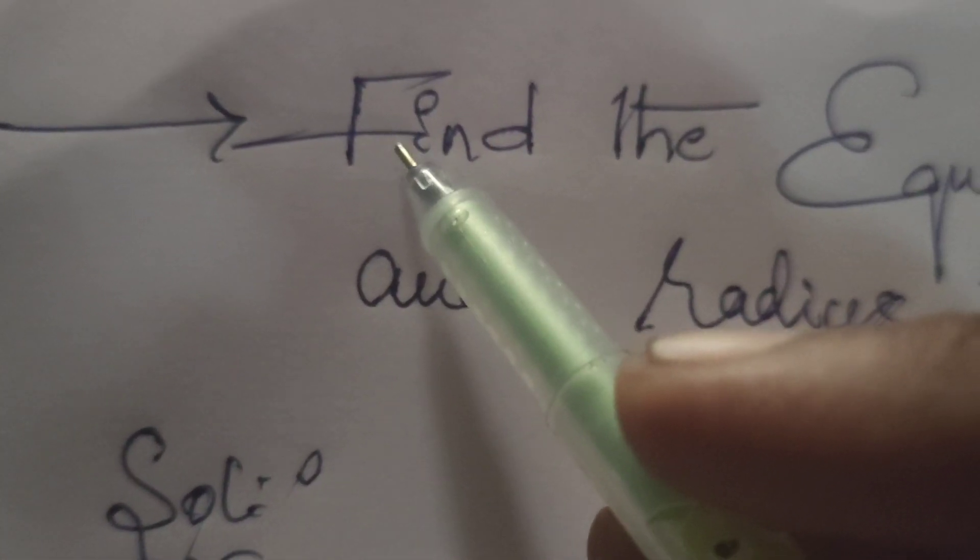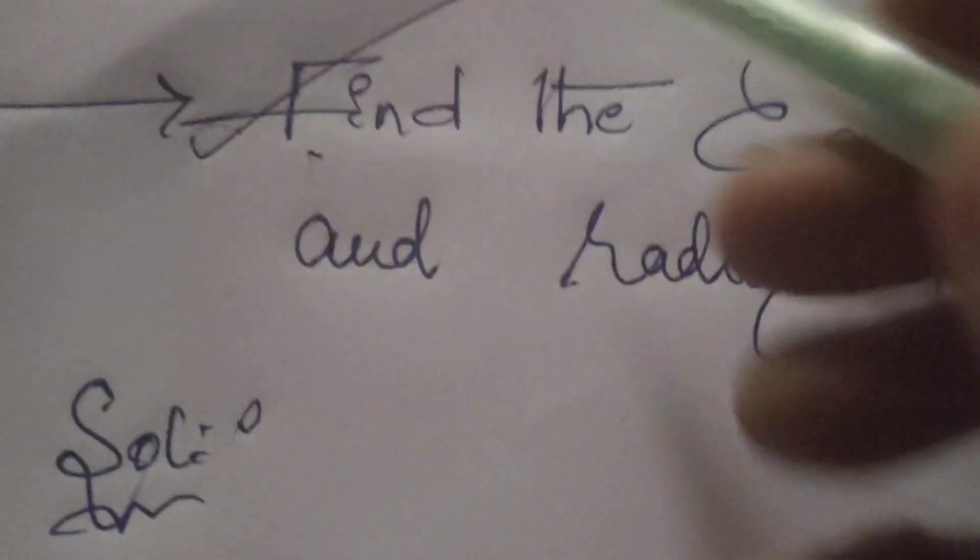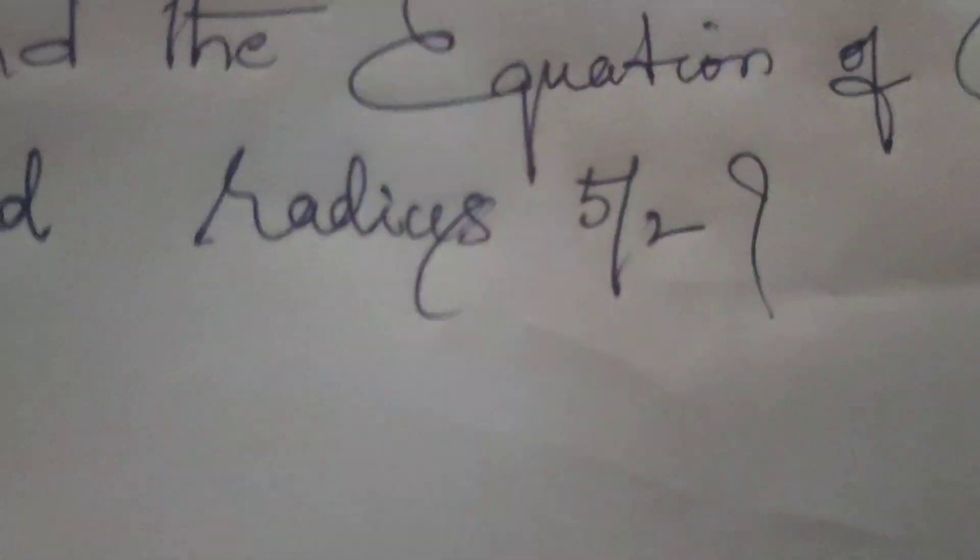This is Dr. Eti. Now today we are going to explain in this problem: find the equation of the circle with center (1,7) and radius 5/2.